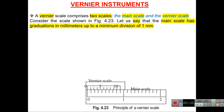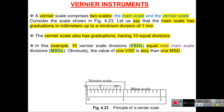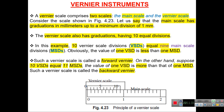The main scale has graduations in millimeters with a minimum division of one millimeter. The vernier scale has ten equal divisions. When ten vernier scale divisions equal nine main scale divisions, one vernier division is less than one main scale division — this is called a forward vernier. If ten vernier scale divisions equal eleven main scale divisions, then one vernier division is more than one main scale division, and this is called a backward vernier.